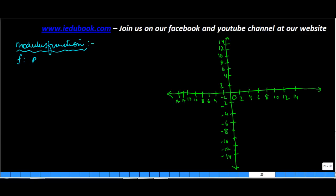Let's say you define a function R to R, such that f(x) is equal to mod x. Do you understand what the meaning of this mod is?